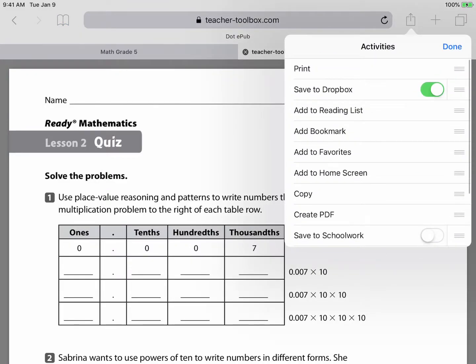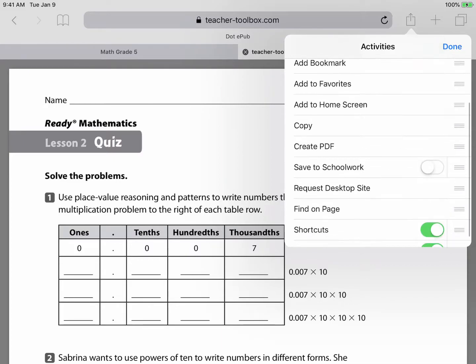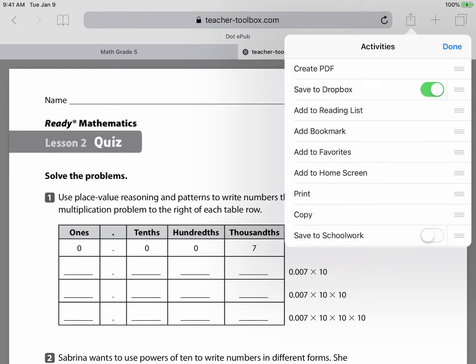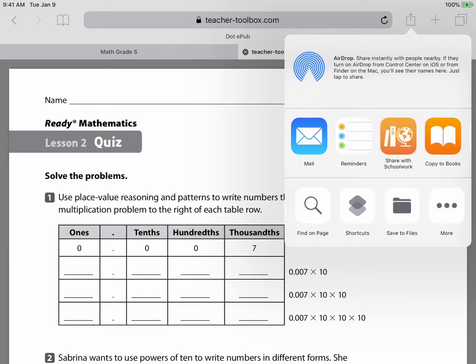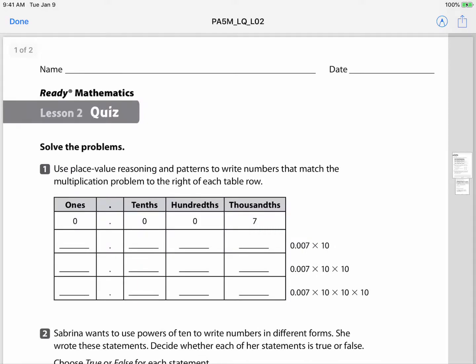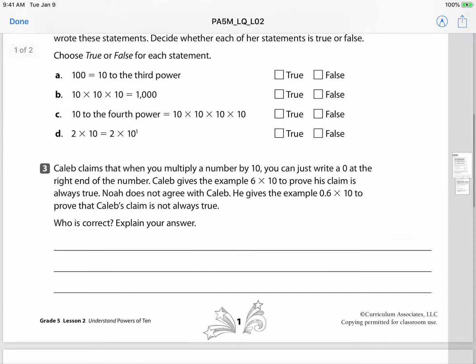So I want the create PDF at the top, not the print. Okay, now if I tap on create PDF it automatically creates the PDF for me.